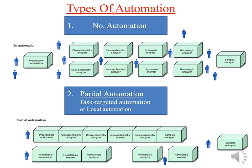There are three different sections shown in this diagram: chemistry and immunochemistry are together, hematology is together, and hemostasis is another section, with a fewer number of people required.